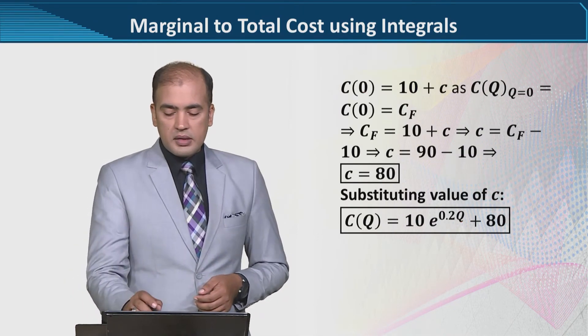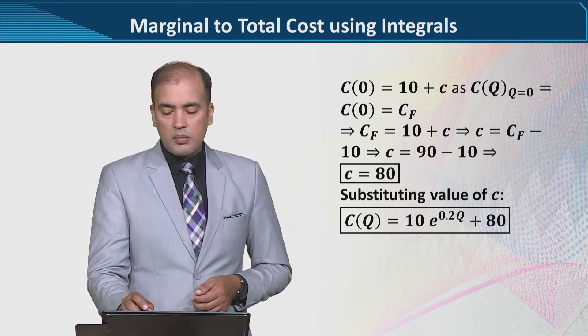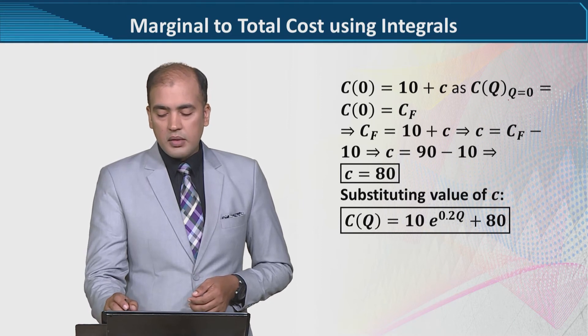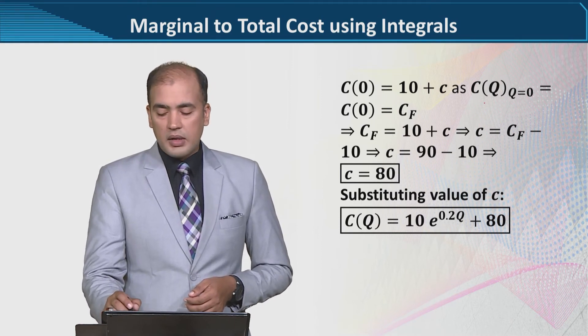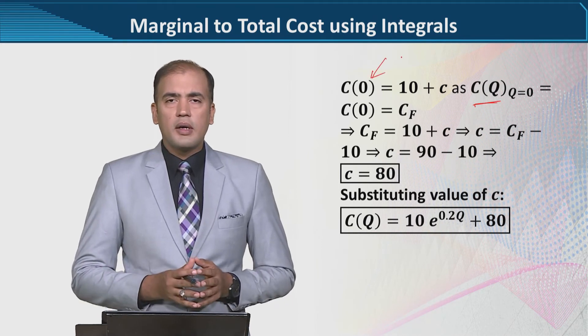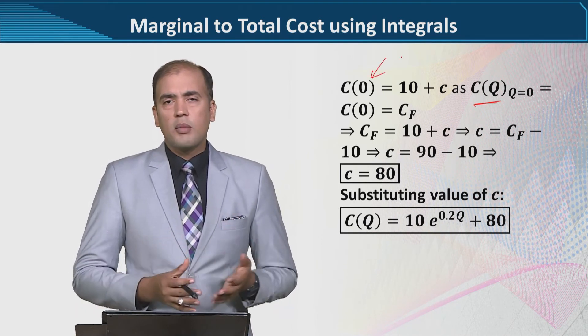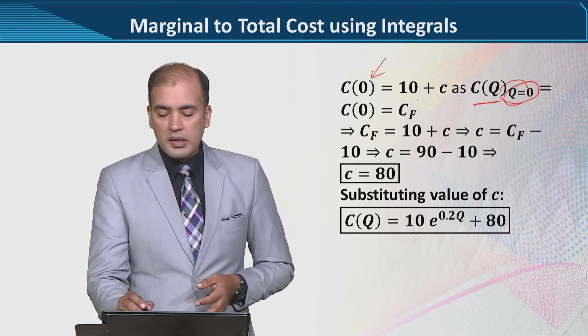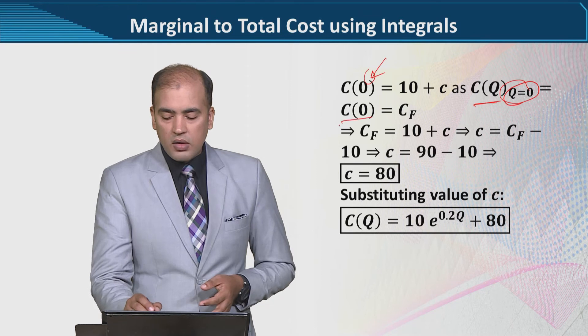It says, C(0) is equal to 10 plus c, right? And 10 plus c as C(Q), Q is equal to zero. That is, fixed cost, when the output is zero, just like mentioned here.